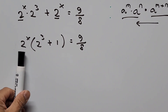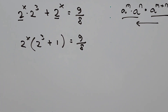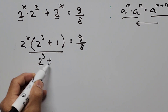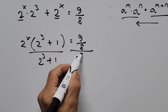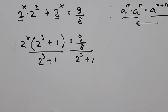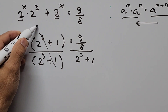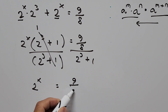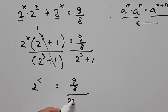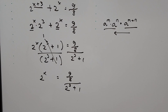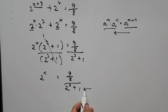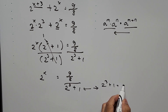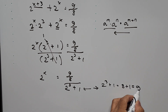The exponential term 2^x is now isolated. We divide both sides by the quantity 2 cubed plus 1, which cancels on the left, giving 2 to the power of x equals 9 over 8, all over 2^3 plus 1. Simplifying the denominator: 2 cubed is 8, plus 1 is 9, so the denominator is 9.